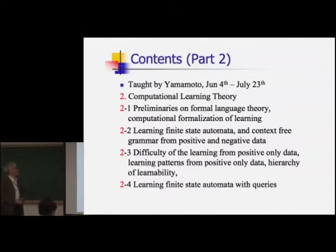The second part, the latter half, is taught by me from June 4th to July 23rd on Computational Learning Theory. At first, I give some preliminaries on formal language theory and computational formalization of learning. Then I introduce learning finite state automata and contextual grammar from positive and negative data. The third subject is to show the difficulty of learning from positive-only data. Then I show the learning patterns or monomials from positive-only data and show the hierarchy of learnability. The last content is learning from finite state automata with queries.